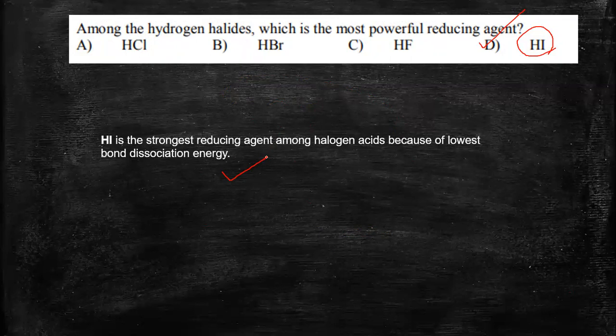So we have done a video on P-block elements before, where we have covered all these kinds of trends like acidity, how the acidity varies, how the reducing power, oxidizing power varies for all the P-block elements. So you can look at it. That is a very simple video where you can cover almost all the points in a few seconds. I will give the link in the description box. Please try to cover it by the end of your examination. Now let's move ahead.